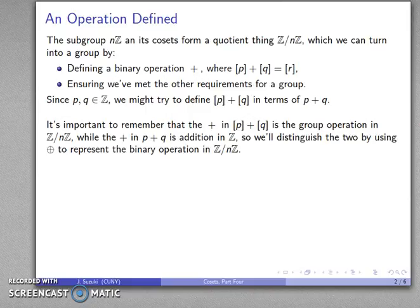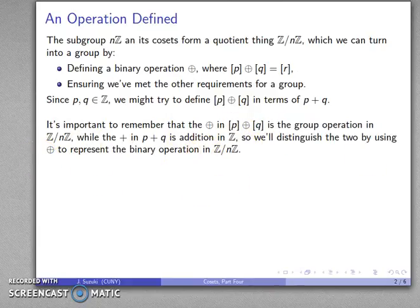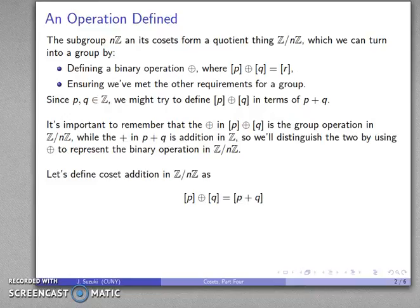One way we do have to distinguish between the two is we can introduce our special symbol, circle plus, to represent the binary operation in our set of cosets. So I'll replace those, and we can leave plus to indicate the addition of integers.